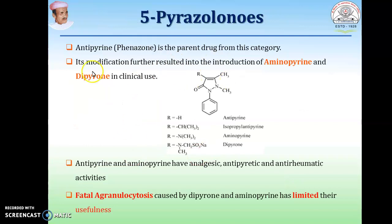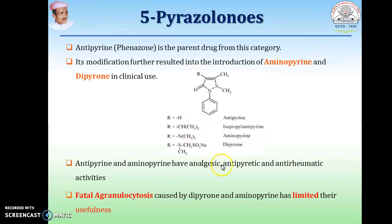Another class: 5-pyrazolones. Antipyrine is the major drug of this category. Other examples include aminopyrine and dipyrone. These drugs have analgesic, antipyretic, and anti-rheumatic activities, but they cause agranulocytosis as a major side effect, which limits their use.